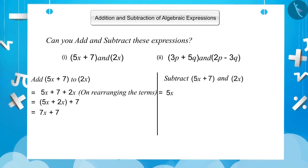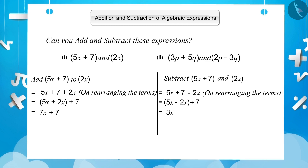Now for subtraction: 5x plus 7 minus 2x. Here, 5x and 2x are like terms, so we rearrange these two terms as (5x minus 2x) plus 7. Since 7 is an unlike term, it cannot be subtracted. Therefore, by subtracting the like terms, we get 3x plus 7.